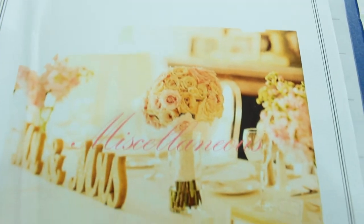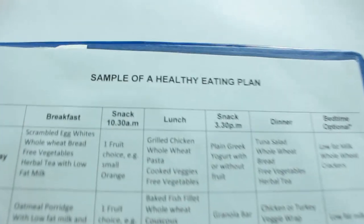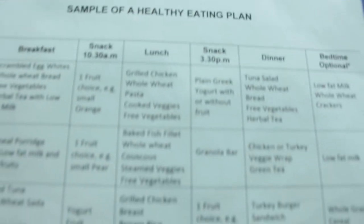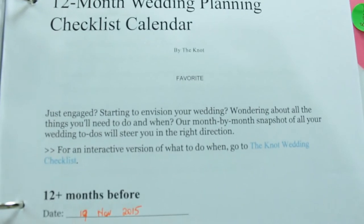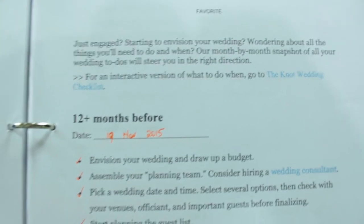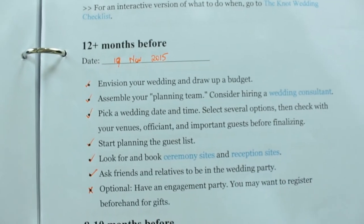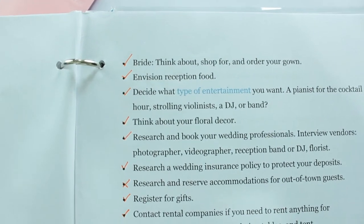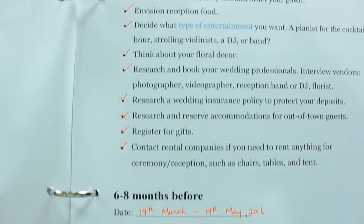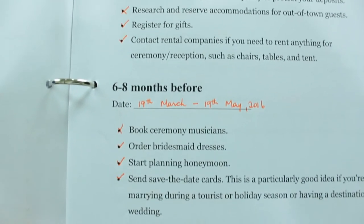Then I had a miscellaneous tab, and in this I kept a healthy eating plan because I wanted to lose a couple pounds before the wedding. I also kept my wedding checklist, and this went into detail as to 12 months out — what you need to get, what you need to start looking at — and I actually put the date next to each item so I have a frame of reference.